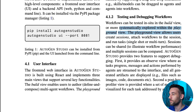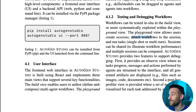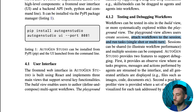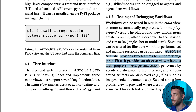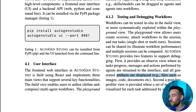The playground view allows users to create sessions — which we were able to do in the previous version — attach workflows to the session, and then run tasks, either single-shot or multi-turn, basically group chats or a one-to-one interaction with one agent. Autogen Studio provides two features to support debugging. First, it provides an observe view where, as tasks progress, messages and actions performed by agents are streamed to the interface and all generated artifacts are displayed, such as files — images, code, and documents.